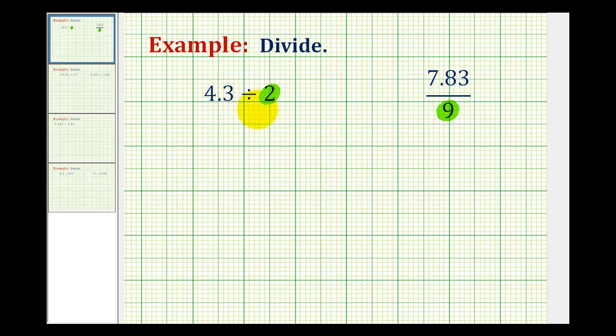To divide a decimal by a whole number, we'll first rewrite this as a long division problem. So we'll have 4.3 divided by 2, and this is a pretty straightforward process when dividing by a whole number. What we need to do is take this decimal point and move it up into our quotient.